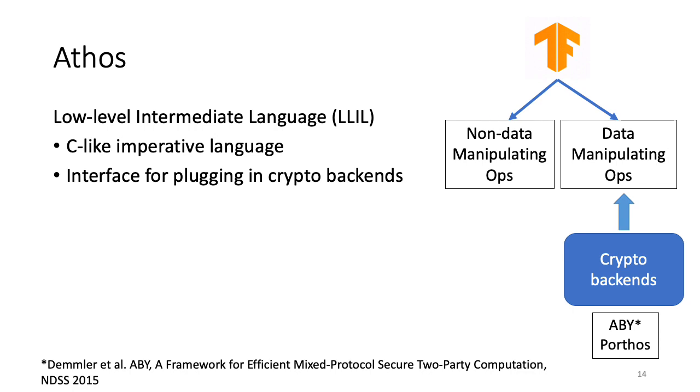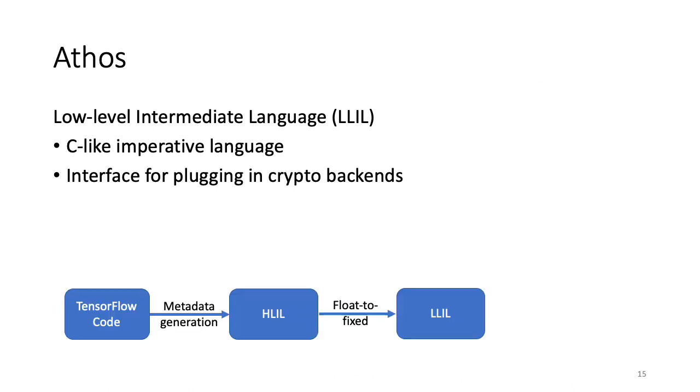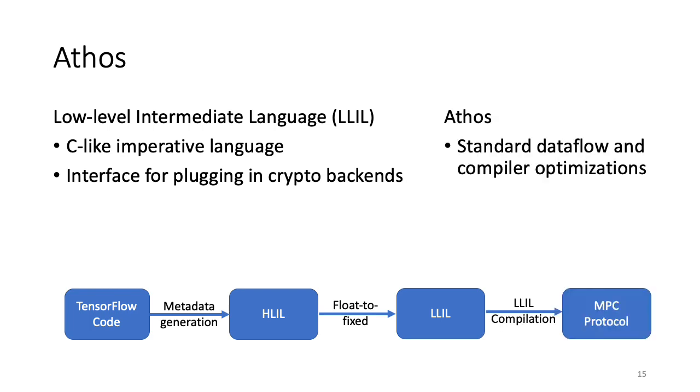To demonstrate the modularity of LLIL, we currently have two backends plugged into it, ABY which is a two-party protocol by Demmler et al. and Porthos which is our own three-party protocol. The final step involves compilation of LLIL to the crypto backend of choice. Having two intermediate languages, HLIL and LLIL, allows us to perform various standard data flow analysis and compiler optimizations. More details on this can be found in our paper.